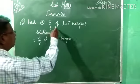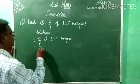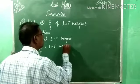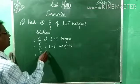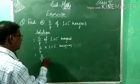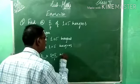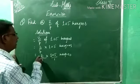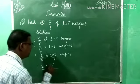Now, fifth example: find 2 by 7th of 105 mangoes. 'Of' means multiply. So 2 by 7 multiplied by 105. Below 105 nothing means we can take it as 105 by 1. Using the formula A by B into C by D equals A into C whole divided by B into D: 2 into 105 divided by 7 into 1.